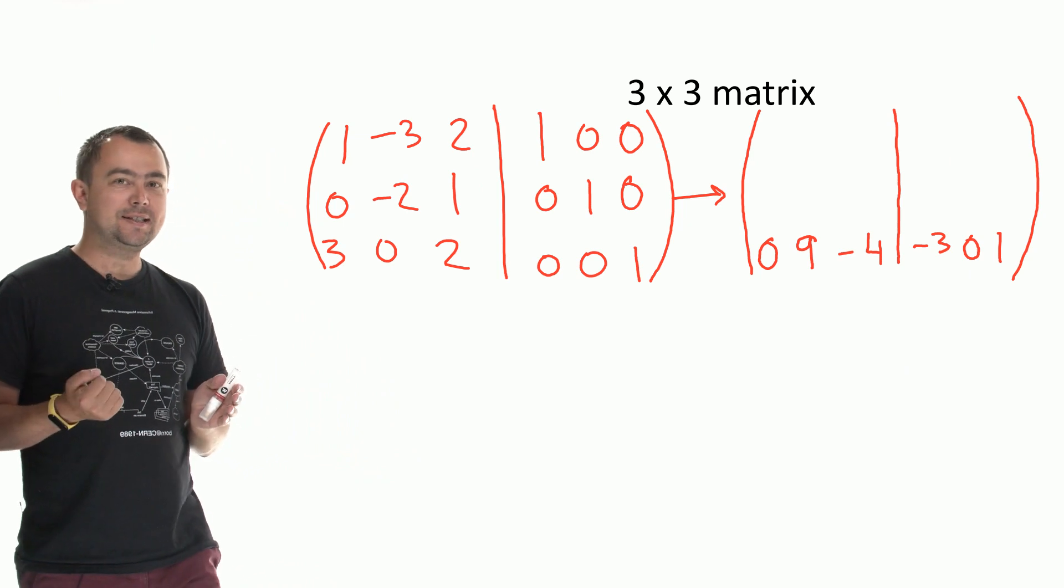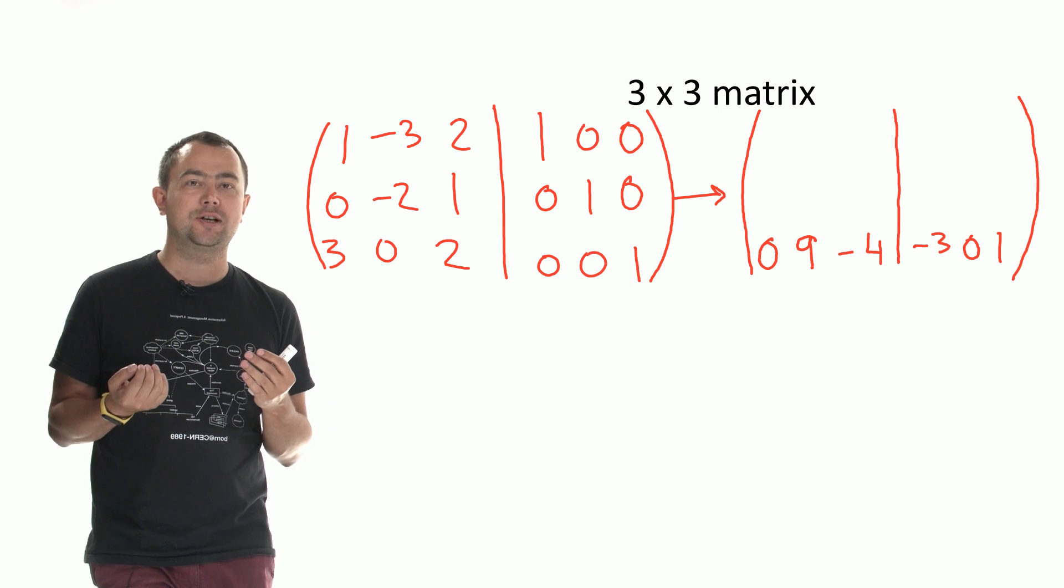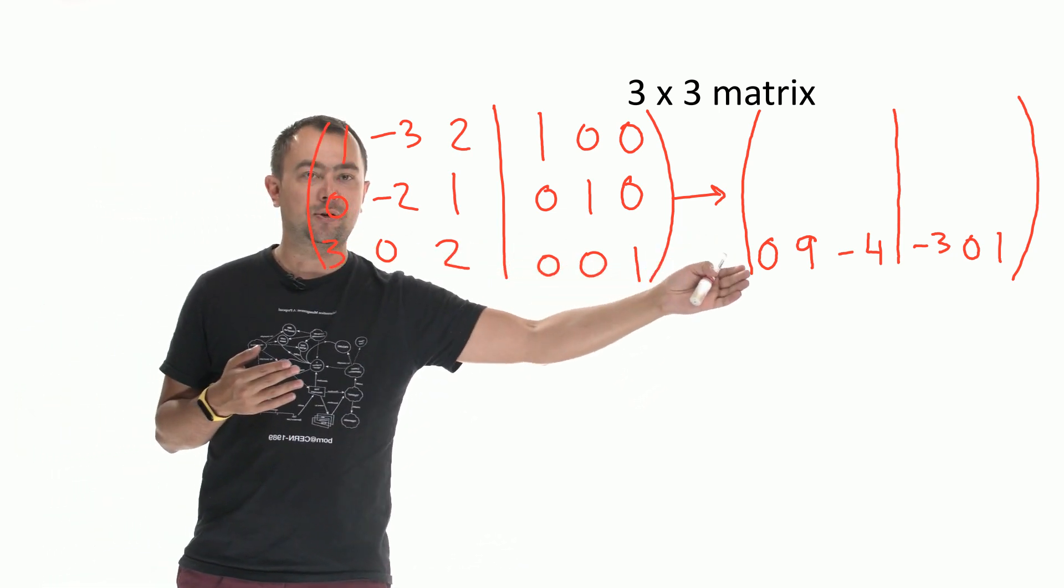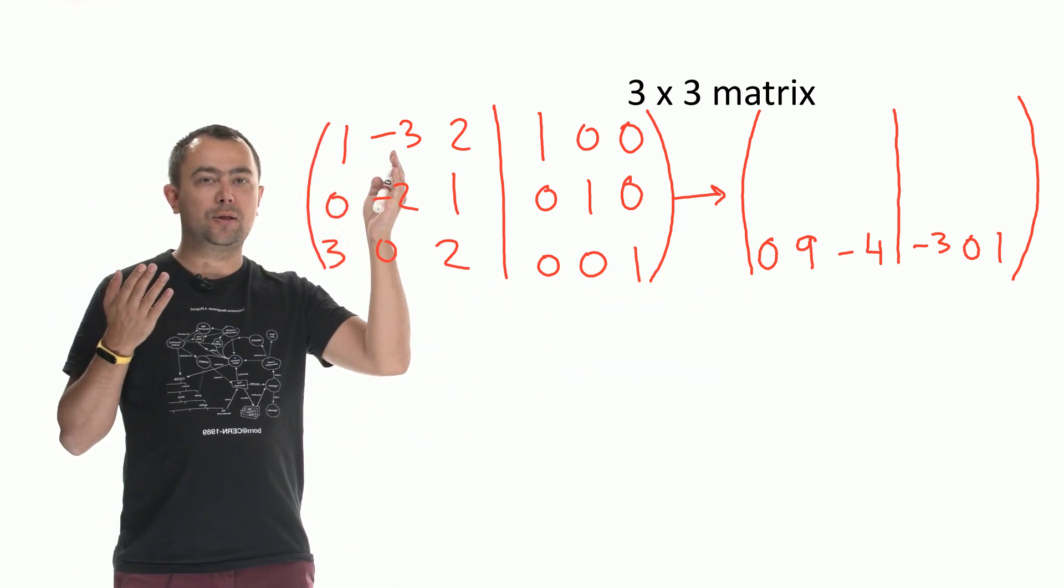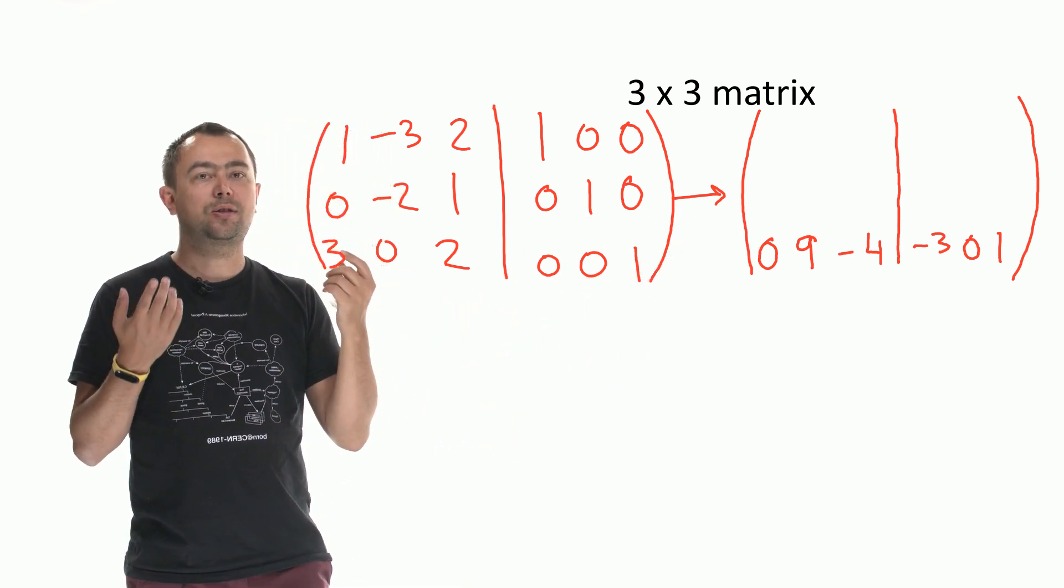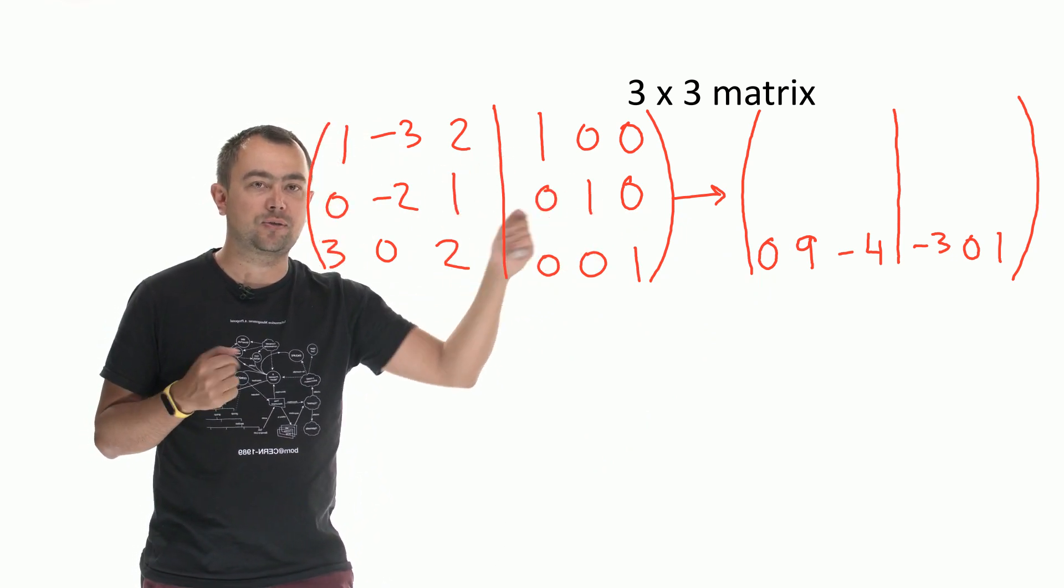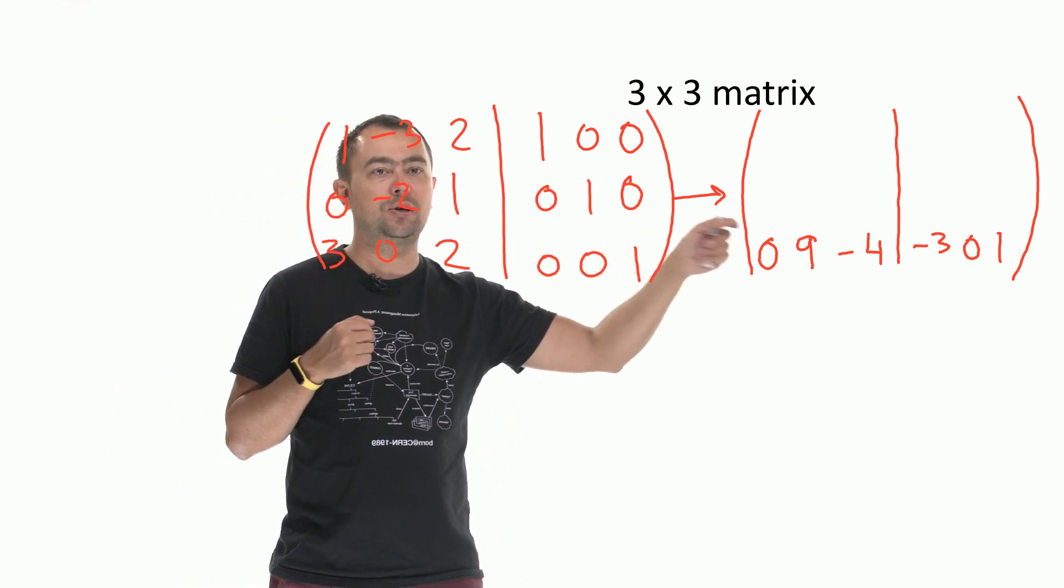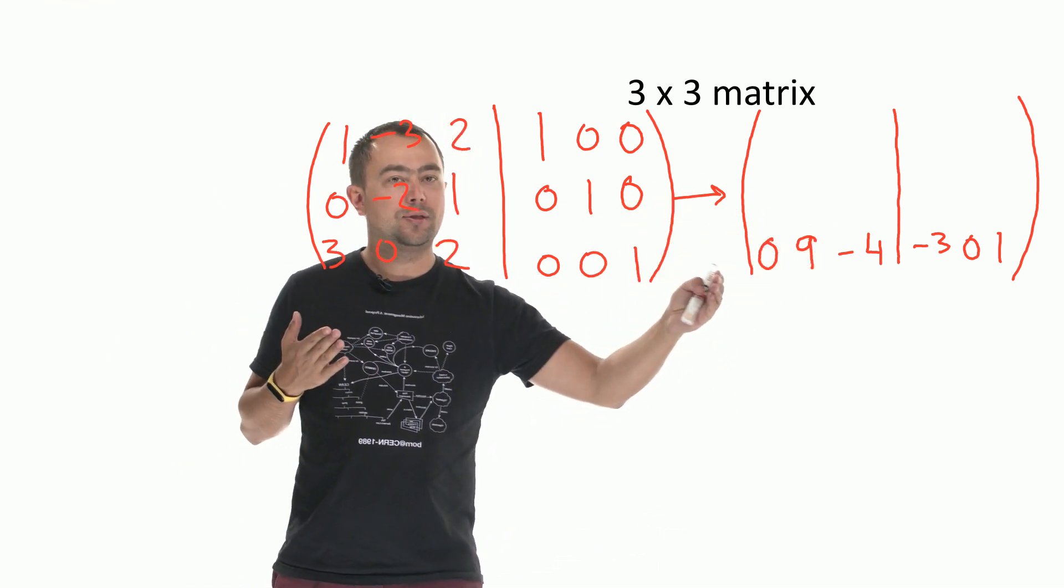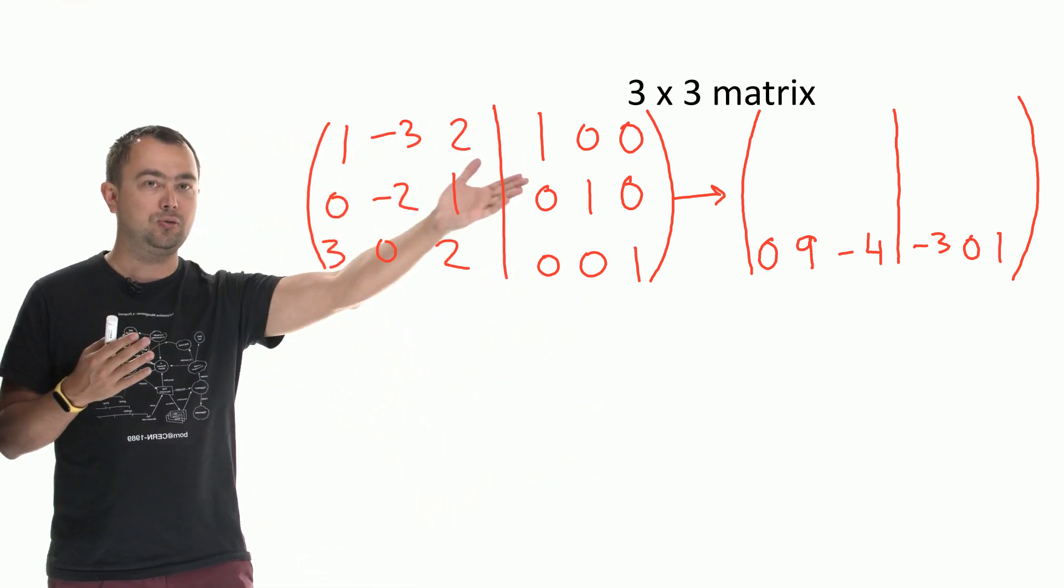So what I did is I subtracted the first row from the third row 3 times. So 3 minus 3 times 1 is 0. Here you have 0. 0 minus 3 times minus 3 is 9. 2 minus 3 times 2 is minus 4. 0 minus 3 times 1 is minus 3. 0 minus 3 times 0 is 0. 1 minus 3 times 0 is 1. And all we do now is we copy the first two rows to the new matrix.